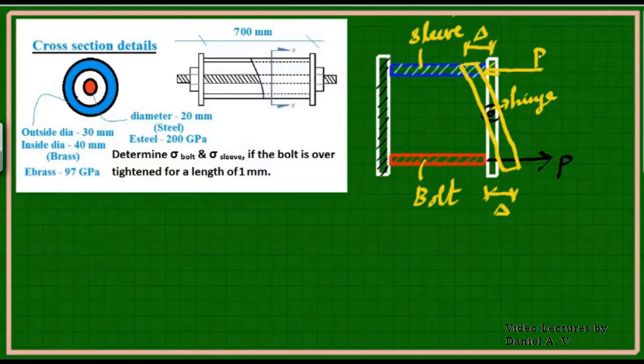If you observe, the force generated in the blue member which is compressive in nature is also P, and this will move the same amount delta. This is exactly what is happening. When we are tightening, the steel member experiences tensile effect, this sleeve experiences compressive effect, and the total effect is delta. This delta is contributed by the elongation of steel and compression of sleeve, so I can write delta = delta bolt + delta sleeve.